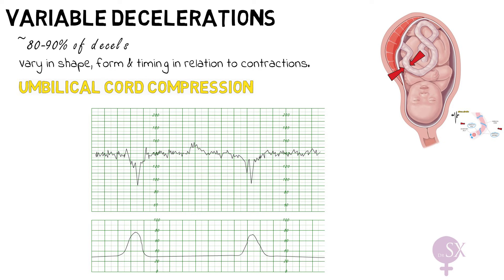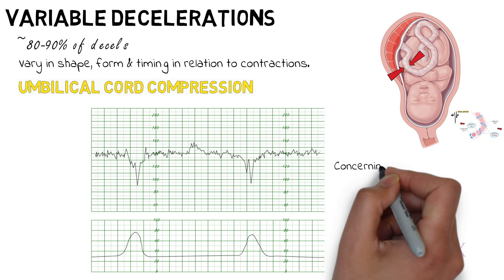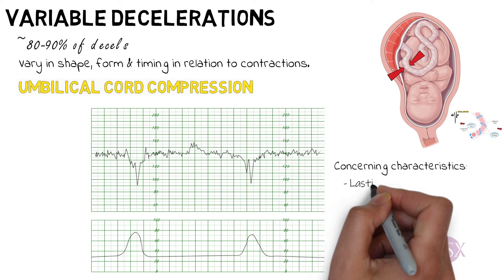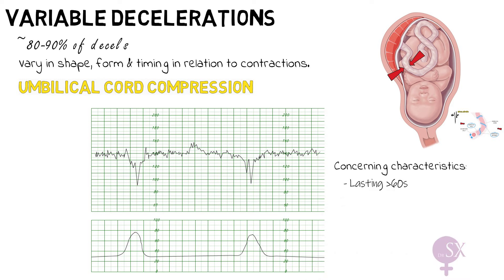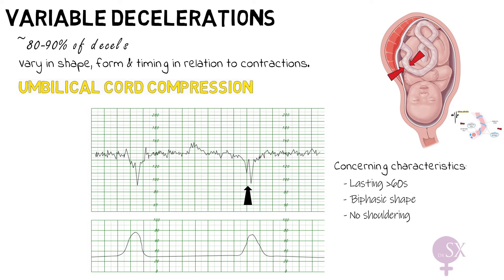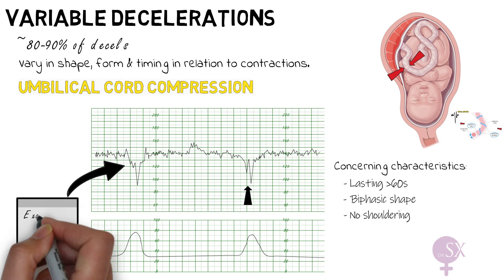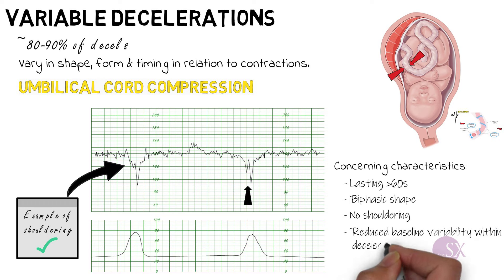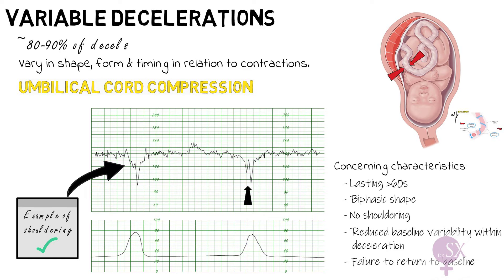Variable decelerations vary a lot in their shape, form, and timing. There are particular characteristics of variable decelerations which are concerning and a sign that the baby is getting tired. These include: if the deceleration lasts for more than 60 seconds; if the deceleration has a biphasic shape, which basically looks like a W; no shouldering, which as described previously is a sign that the fetus is compensating well; reduced baseline variability within the deceleration; and the failure to return to baseline. These are all signs that worry us.